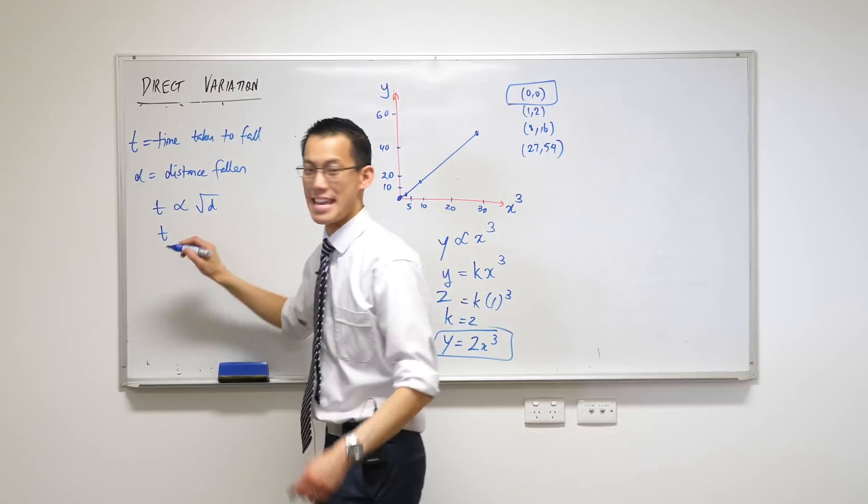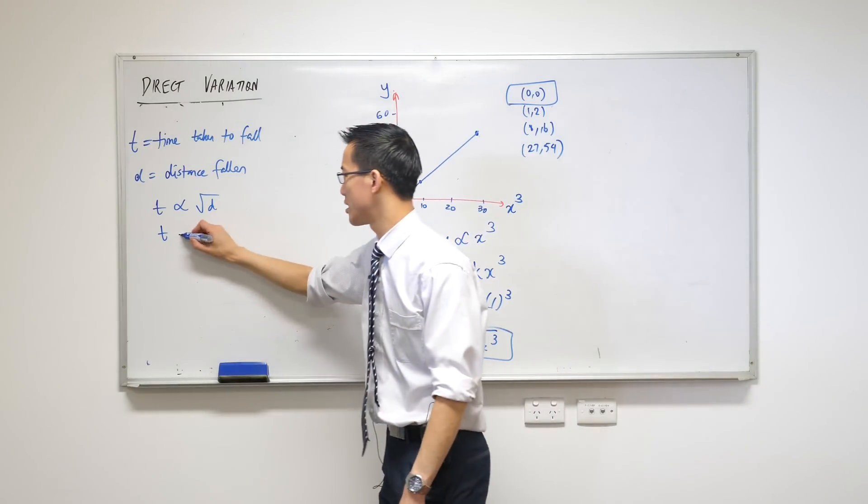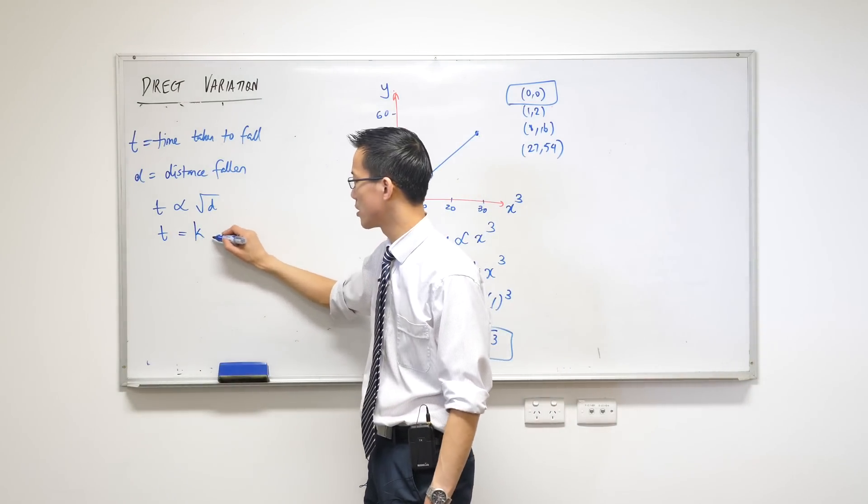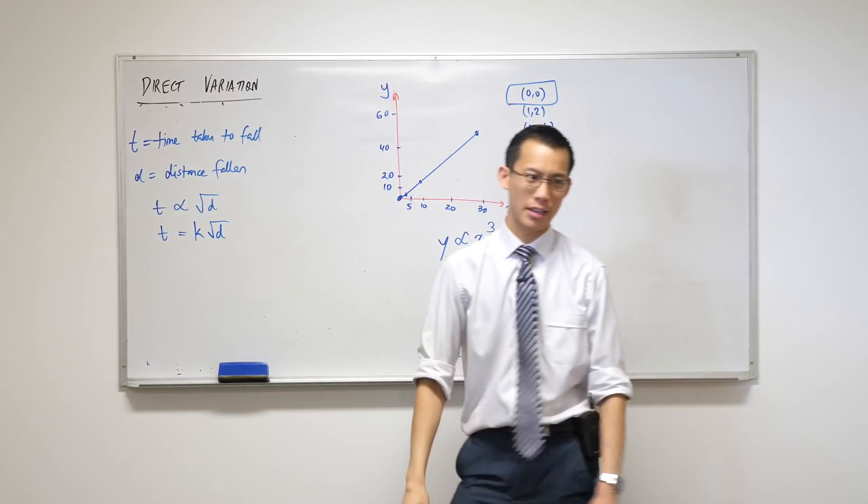So I can now form my equation, which is t equals k times the square root of d. There's my constant, perfect.